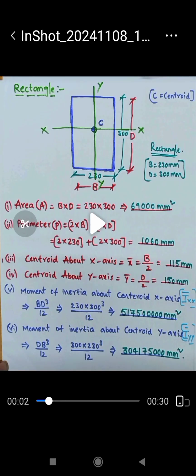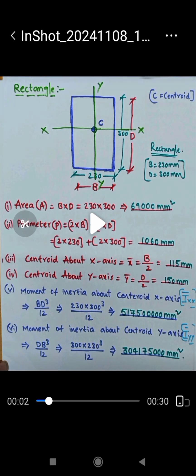As you see here, we are used to calculate area, perimeter, centroid about x-axis and y-axis, and moment of inertia about centroidal axis, both x and y directions, Bd³/12 and dB³/12 respectively.